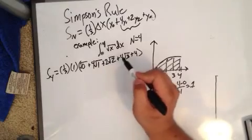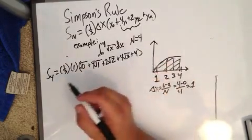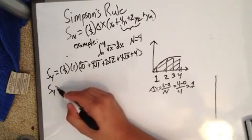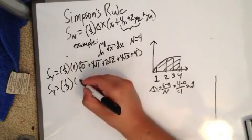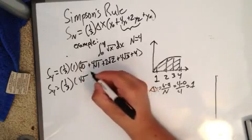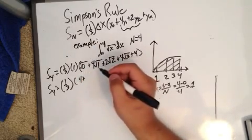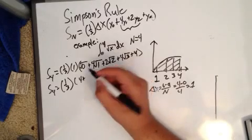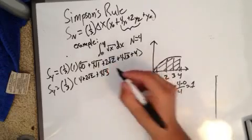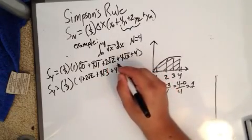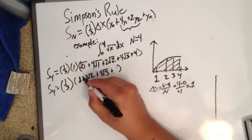So remember, 4, 2, 4, and then just the end point n, which is 4. So S_4 is equal to 1/3 times 4 plus 2 times the square root of 2 plus 4 times the square root of 3 plus 4. And we'll just add these 4s right now. We'll say 8 plus all those.